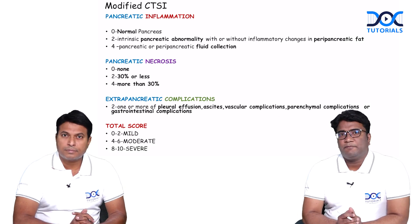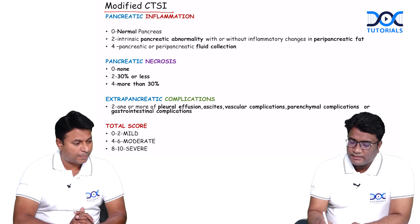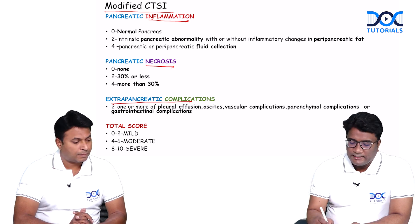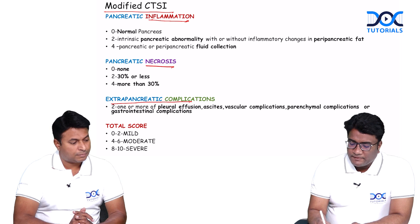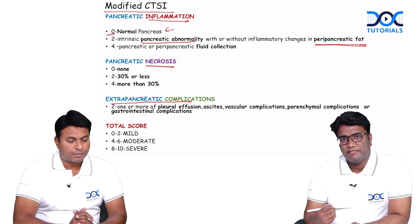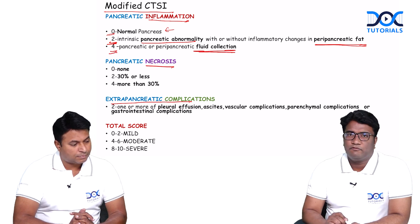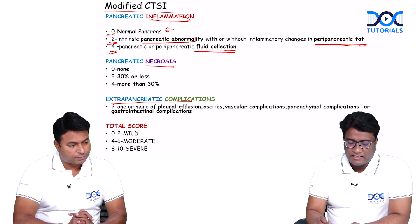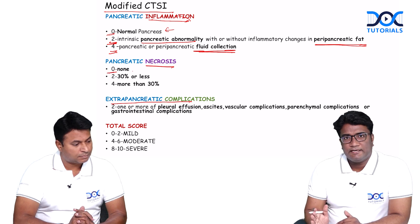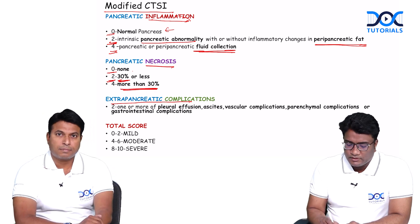To grade the severity of pancreatitis, we use the Modified CT Severity Index (MCTSI). We look at pancreatic inflammation, pancreatic necrosis, and extra-pancreatic complications, each given a different score. A normal pancreas scores zero. Pancreatic abnormality with peripancreatic fat inflammation scores two. Peripancreatic fluid collections score four. For necrosis: none scores zero, less than 30% involvement scores two, and more than 30% scores four.